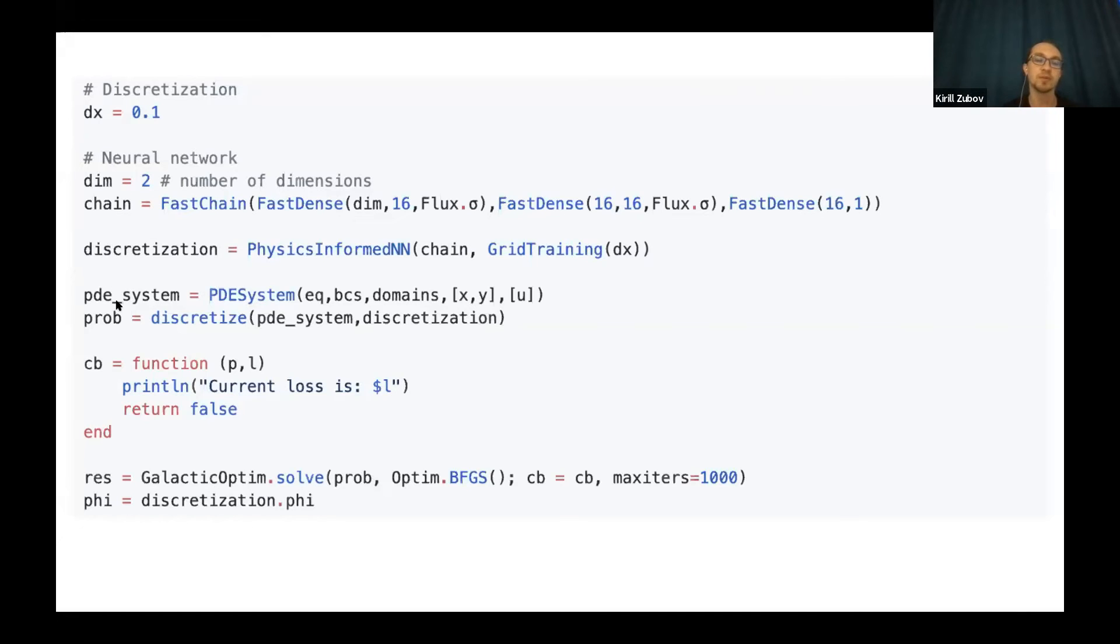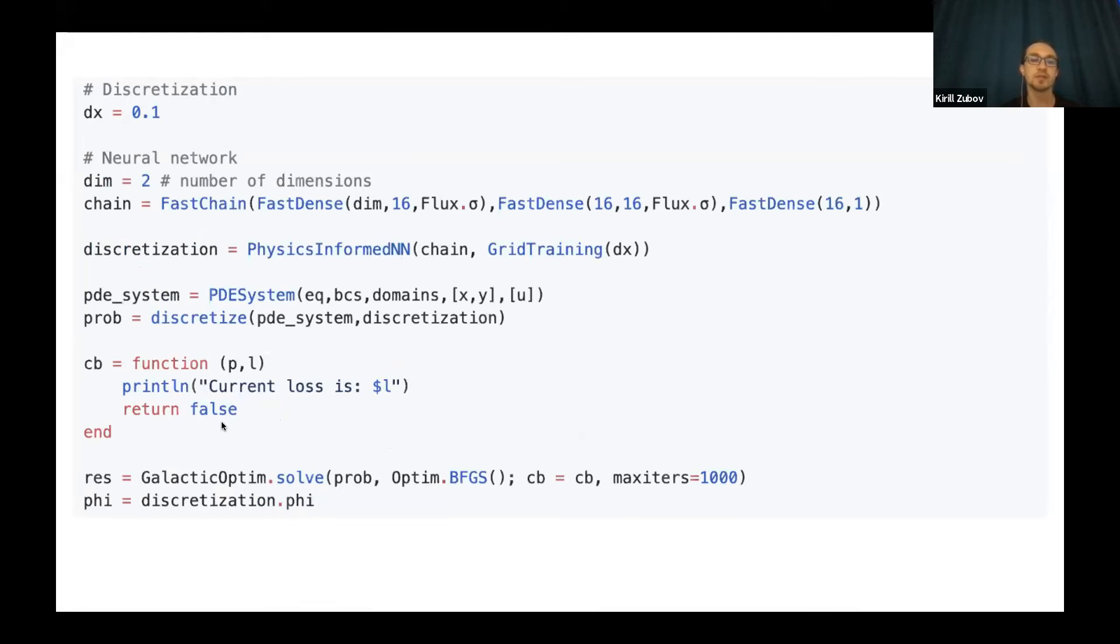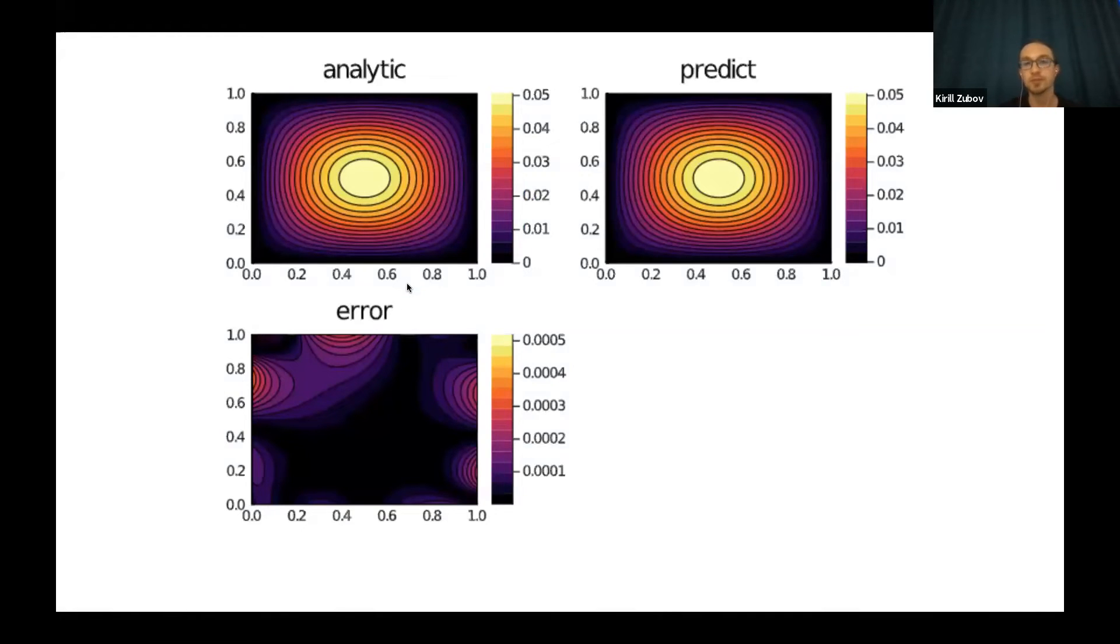And the final problem is an optimization problem that contains the loss function that you can see here. And then we just use this problem and move to the optimizer and just train this loss function until we have some solution. And for this two-dimensional Poisson equation, we can have some prediction and some analytical solution. And this is the error between the analytical and prediction.